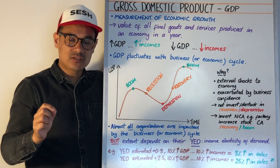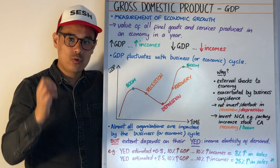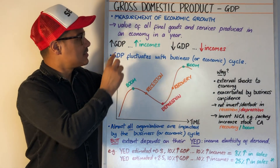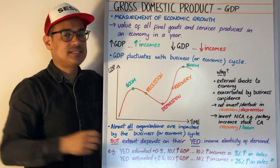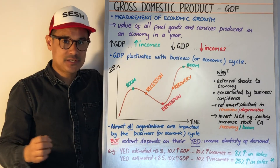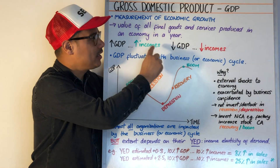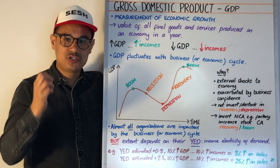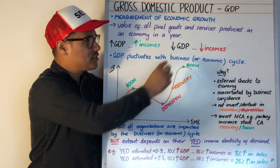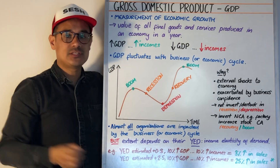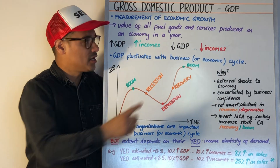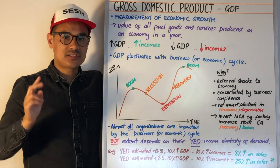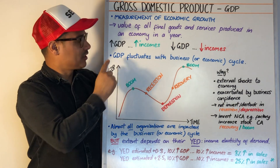The important thing to recognise with GDP is if GDP increases, it suggests that incomes are going to increase, and if GDP were to fall, it suggests that incomes are going to fall.